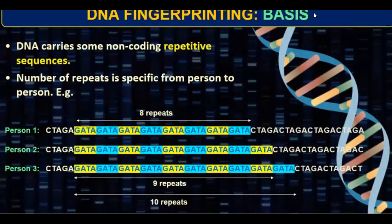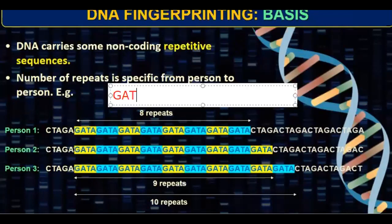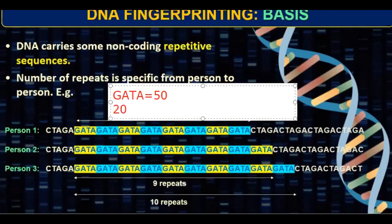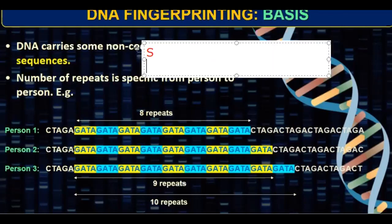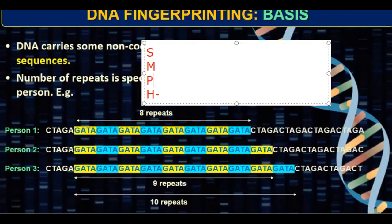What is the basis of DNA fingerprinting? DNA carries some non-coding repeat sequences — the number of repeats is specific from person to person. For example, a GATA sequence — a child will have a repeat sequence similar to their parent's, and that sequence is specific to a person.